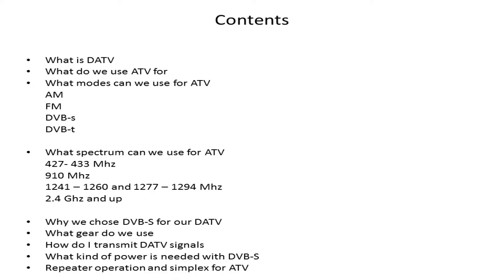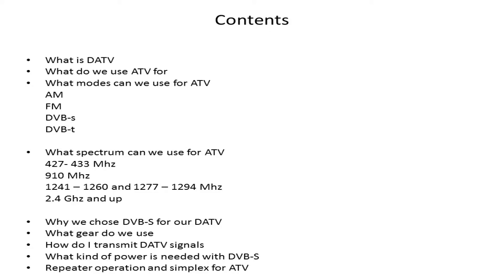We're going to ask what do we use ATV for — why do we need to have our face broadcast out all over the place? It can get very entertaining. We see dogs, cats, airplanes, buzzards chasing airplanes, and sometimes really cool stuff. We'll cover the modes we can use, the spectrum available, why we chose DVB-S, what gear we use, what power is needed with DVB-S, and finally repeater operation and simplex for ATV.